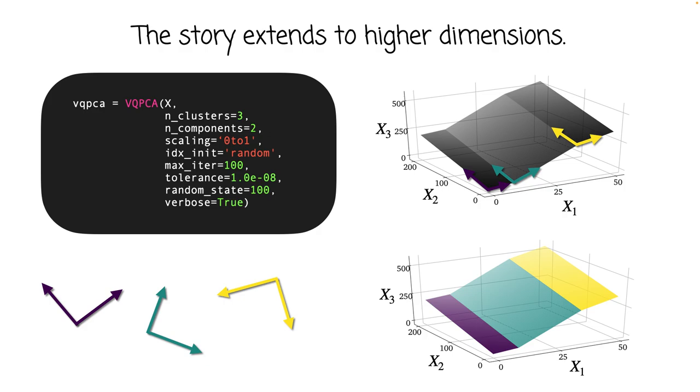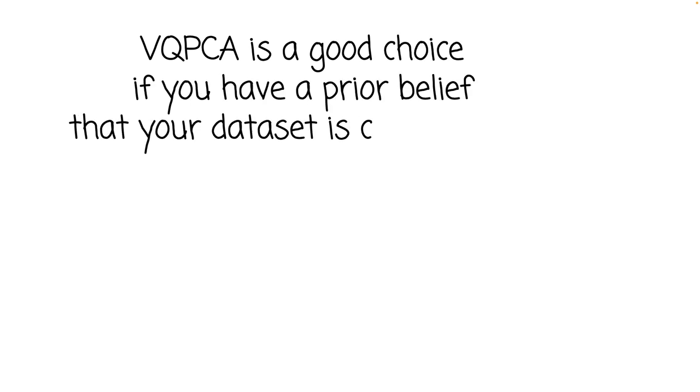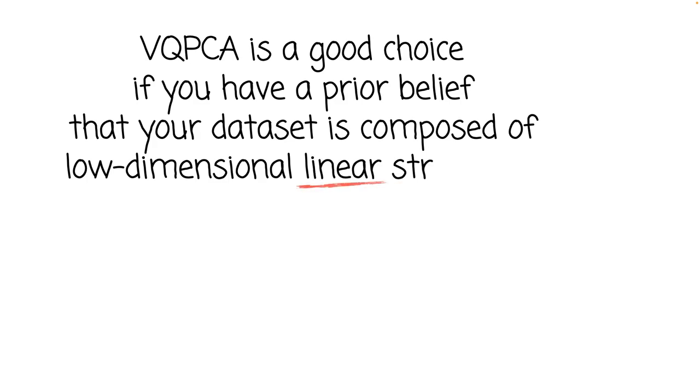And sure enough, here's the result of running VQPCA on this dataset. So the algorithm separates each plane. PCA fold contains plotting functions also for three-dimensional datasets where you can steer the elevation angle and the azimuth angle to view the dataset from the most convenient perspective. So VQPCA is a good choice if you have a prior belief that your dataset is composed of low dimensional linear structures. And for a dataset such as this one, it's a great choice to create natural separations in a dataset.